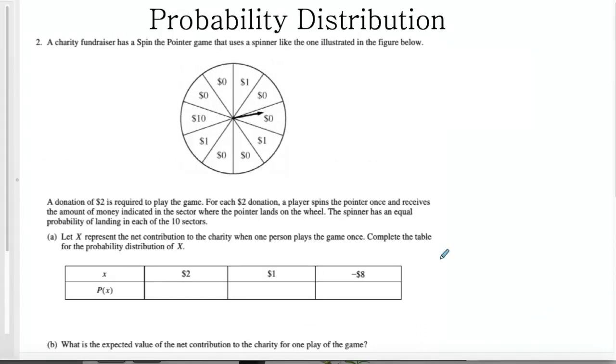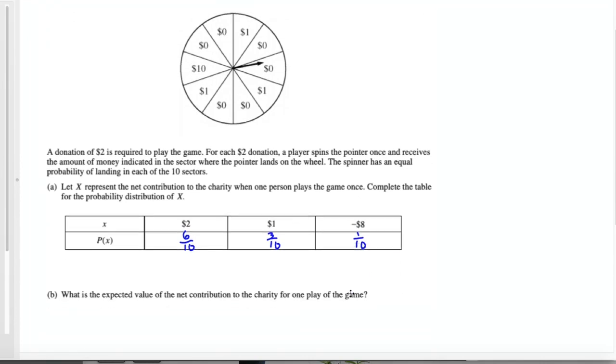For part A of this problem, I have to calculate the probability of each donation amount. So for $2, if I spun a $0, my donation would be $2. There are 6 wedges out of 10 total wedges that are $0. For my donation to be $1, I would have to land on $1, of which there are 3 out of 10. And to lose $8, I would have to spin on the 1 $10 wedge out of 10. So there's the probabilities for each of part A.